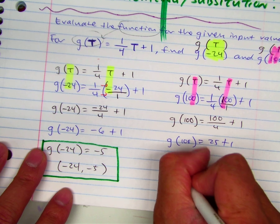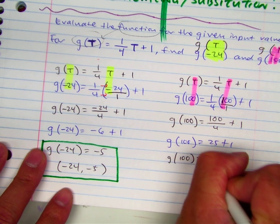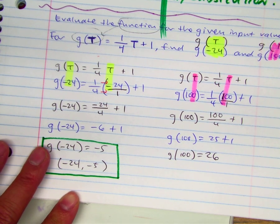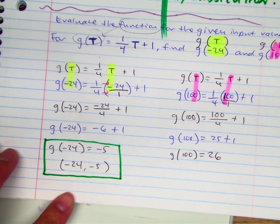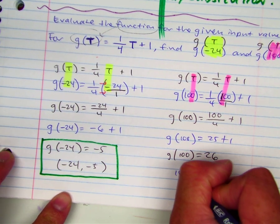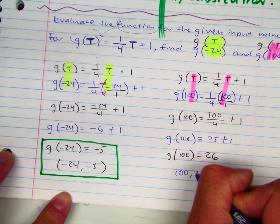G of 100 equals 26, therefore my ordered pair is 100 comma 26.